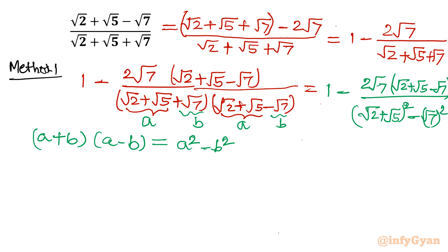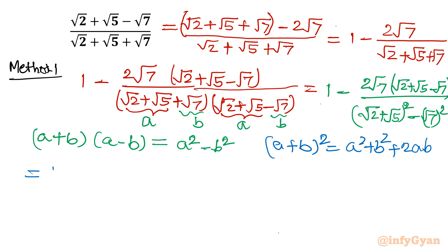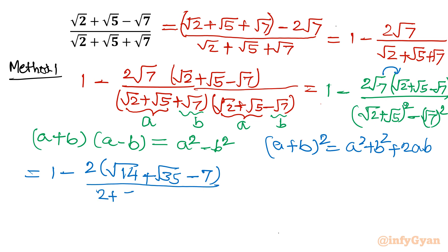Now let us apply the A plus B whole square formula in the denominator: A squared plus B squared plus 2AB. Taking root 7 inside the bracket in the numerator gives root 14, plus root 35, minus root 7 times root 7 which is 7. The denominator expands to 2 plus 5 plus 2 root 10 minus 7, using the property that root A times root B equals root AB.